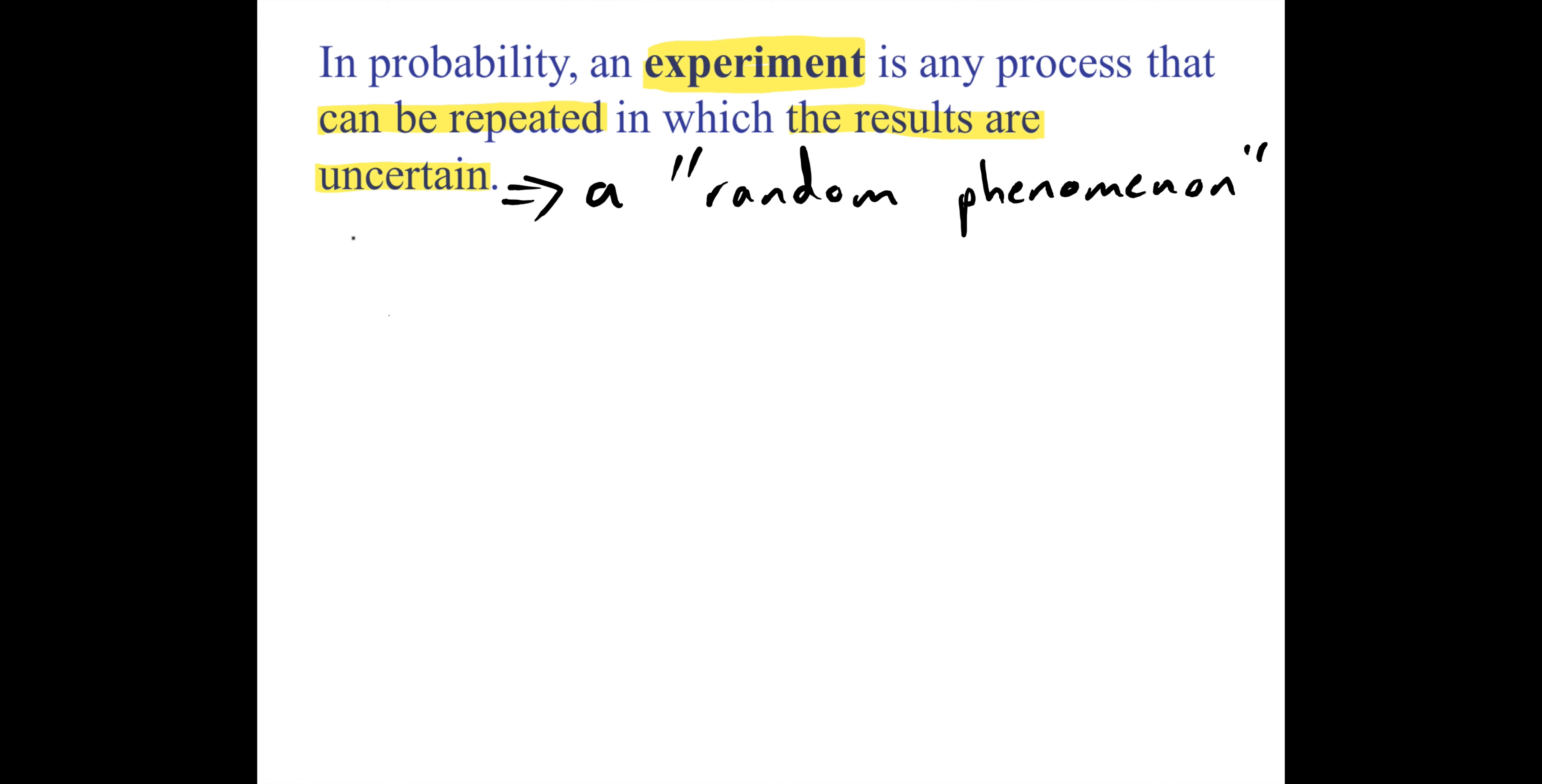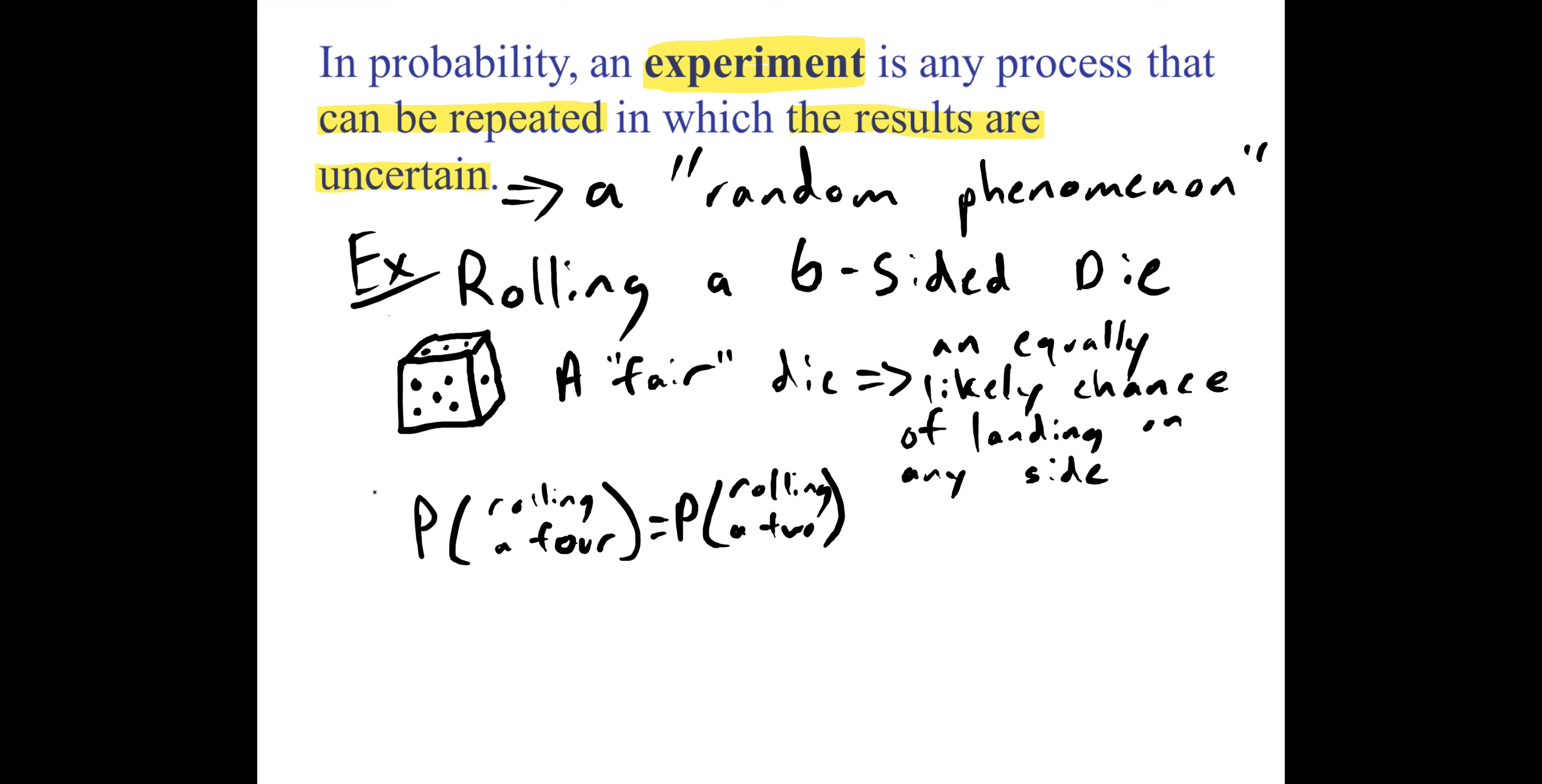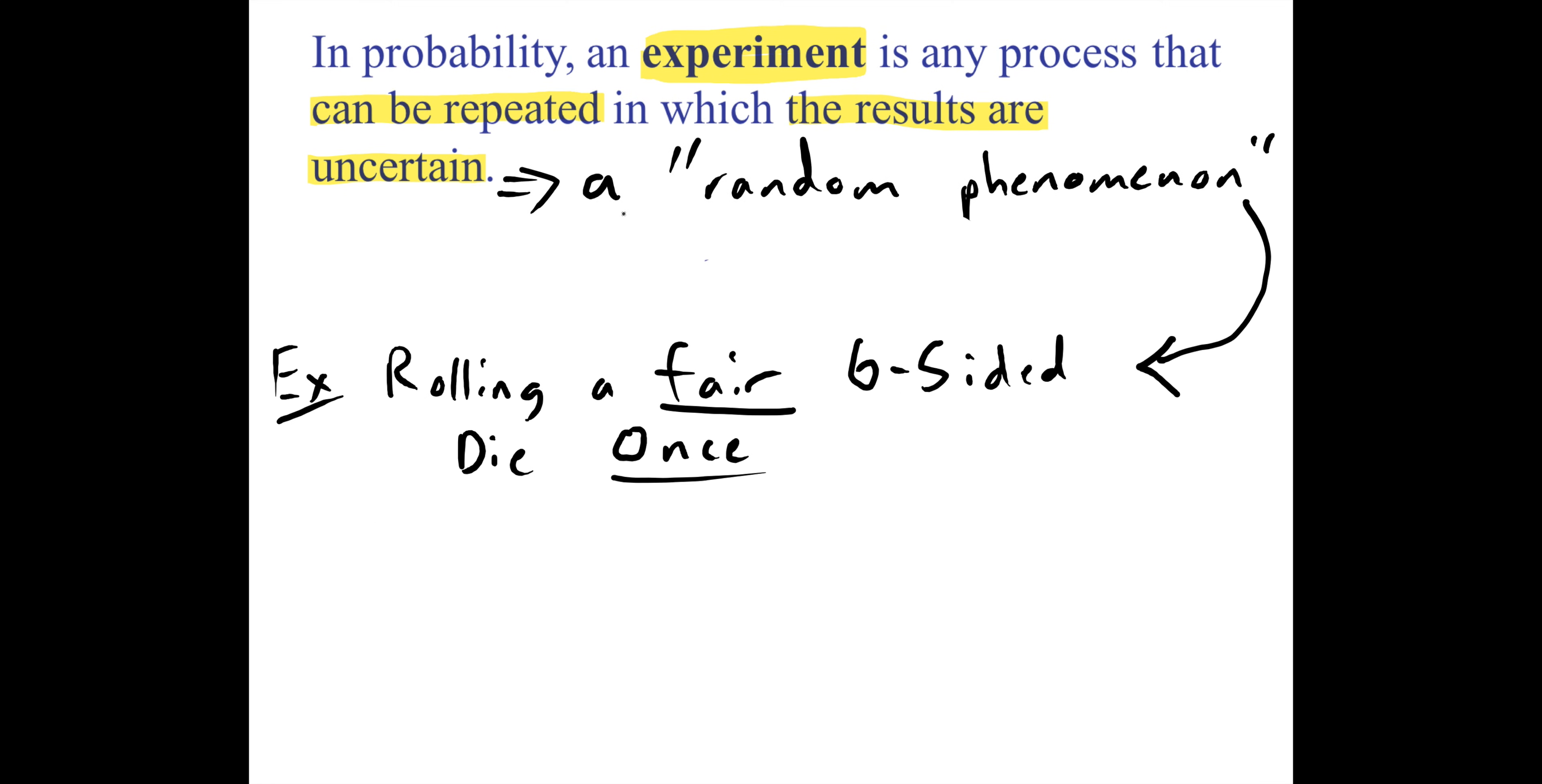An example might be rolling a dice, and specifically we could think about rolling a six-sided die. Most of the time we'll be talking about a fair die that has an equally likely chance of landing on any side or any other number. So we could be a bit more specific with our random phenomenon and say we're rolling a fair six-sided die just once.